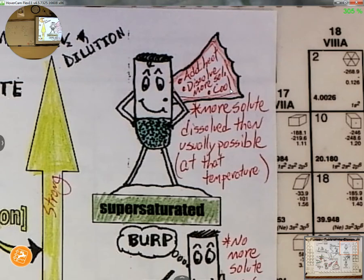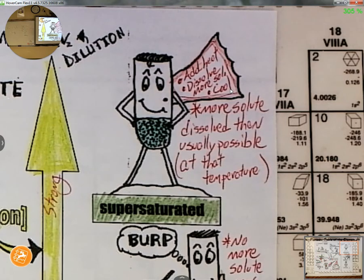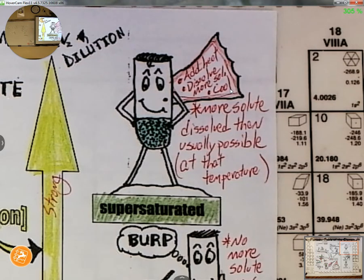Another example: rock candy on a stick or string is made by creating a supersaturated sugar solution, sticking a stick in it, and then crystals start growing back out of the solution.